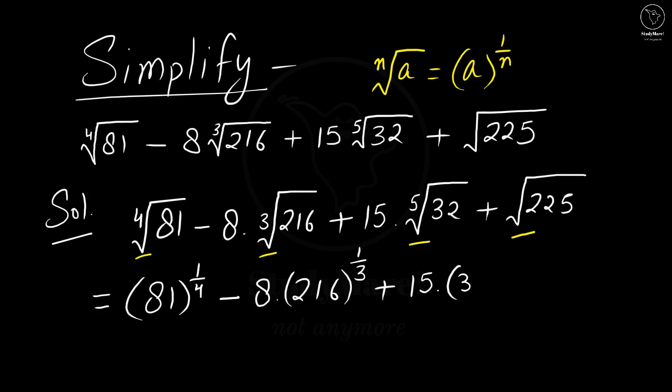Then we have 32 to the power 1 by 5 since it is the 5th root, plus 225. Here we have the square root, that is 2, so we put it as 1 by 2.